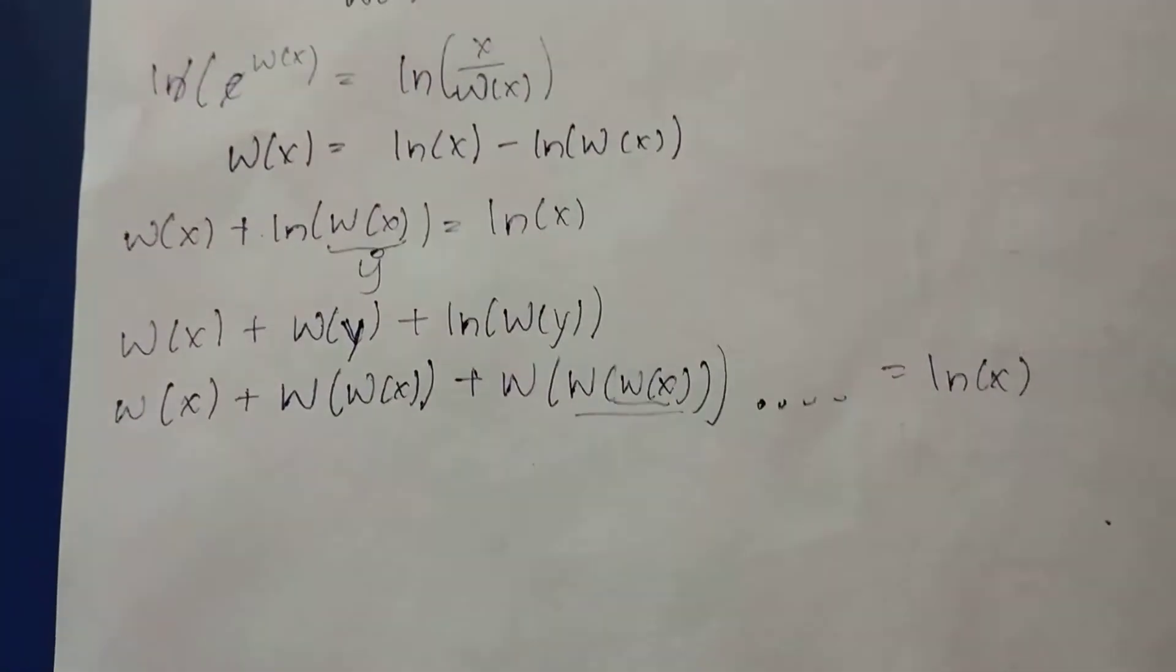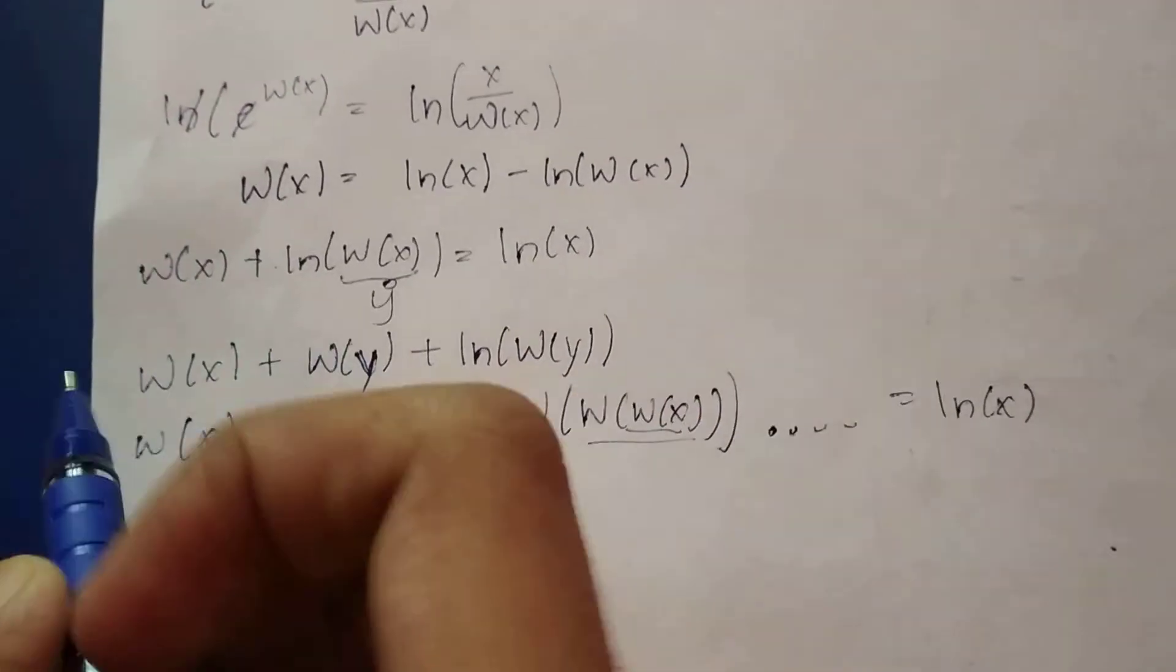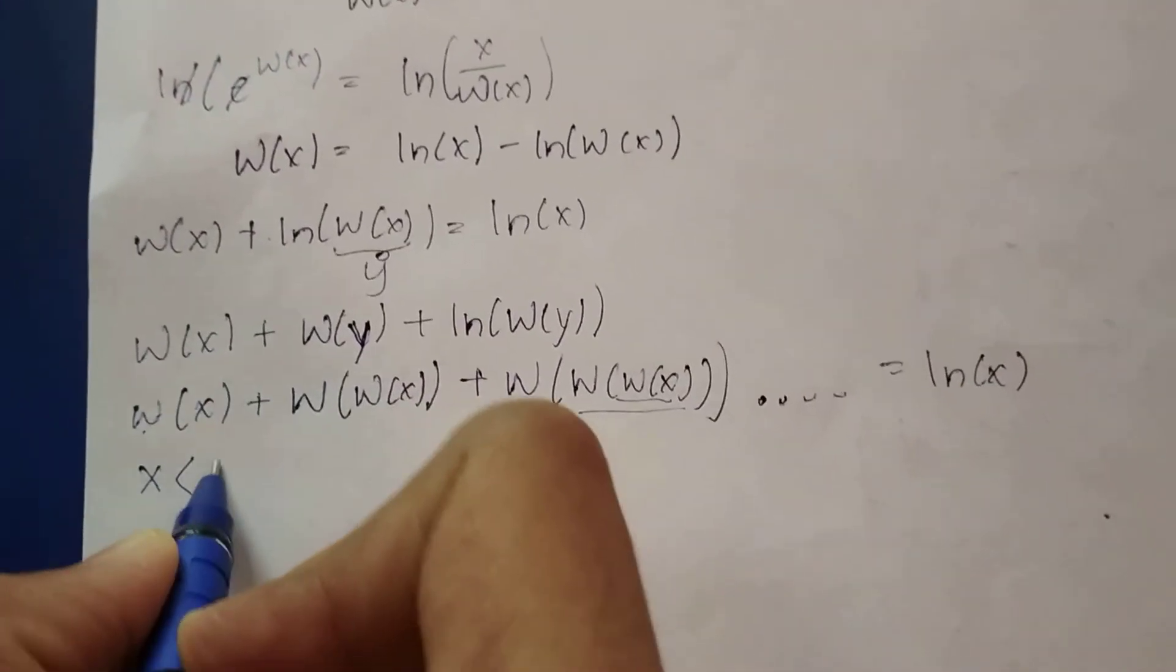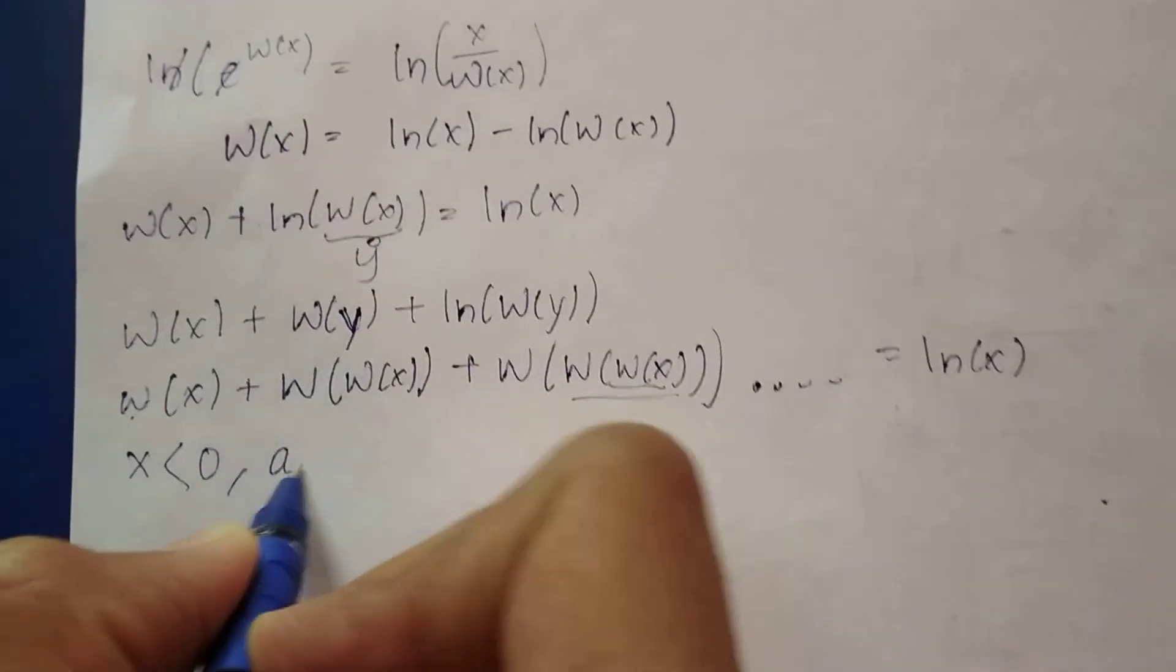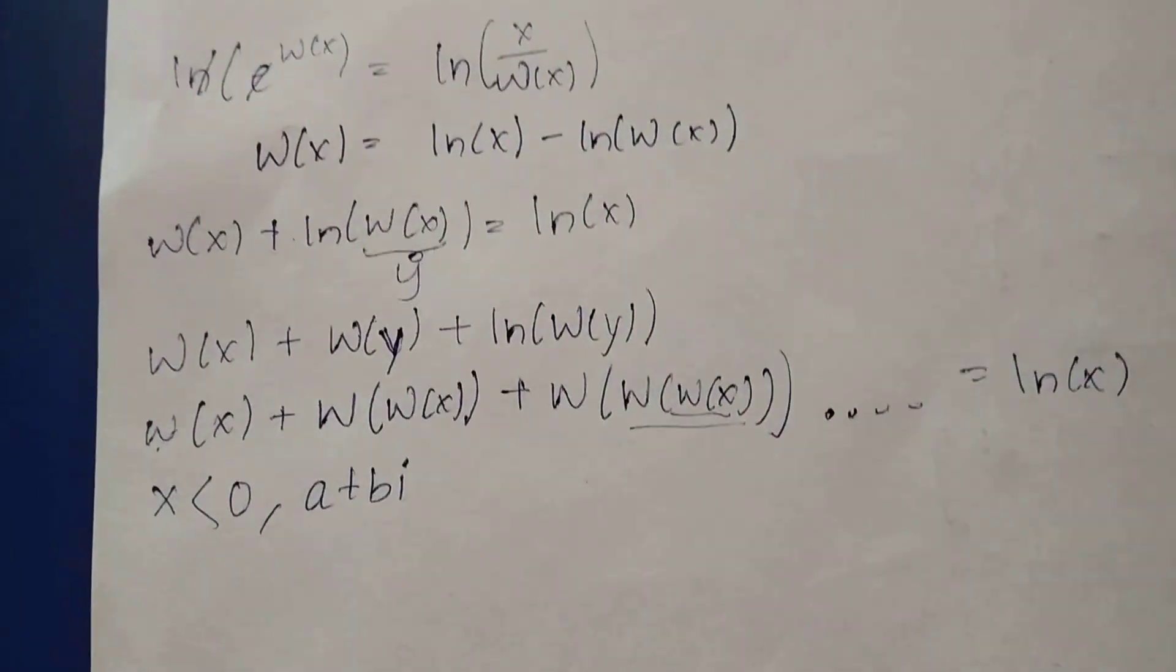So this is the series expansion for natural logarithm of X. Note that X should be greater than zero and it should not be of the form a+bi. Thank you for watching guys.